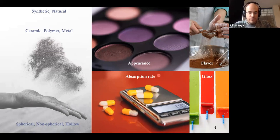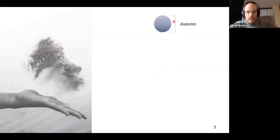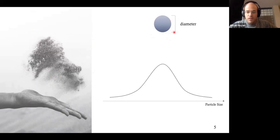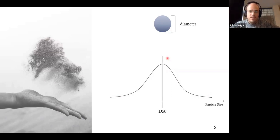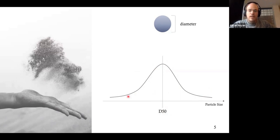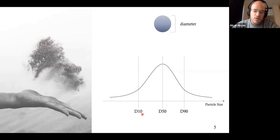So what is particle size? For spherical particles, with just one number — the diameter — we can describe the whole particle. But for a group of particles, we don't have one size; we have a particle size distribution. To describe this with one number, we typically use d50, the median value — half the population is below, half above. For the same d50, we can have different distributions — narrower or wider. To capture the span, we use d10 and d90 values: 10% of the population is below d10, 90% is below d90.